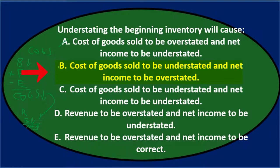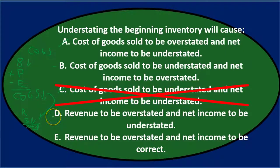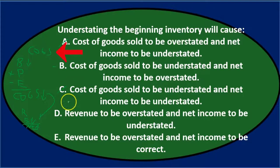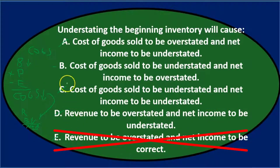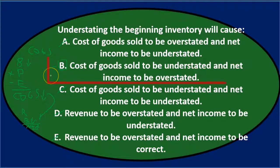B says cost of goods sold understated and net income overstated — that's correct. C says cost of goods sold understated but net income understated — we think net income would be overstated, so that's not it. D and E deal with revenue, but revenue isn't involved here since we're talking about inventory and the cost of goods sold calculation. So the answer is B — understating the beginning inventory will cause cost of goods sold to be understated and net income to be overstated.